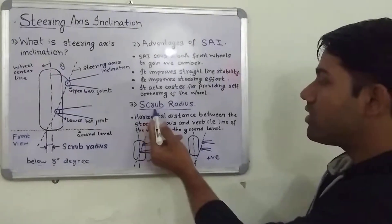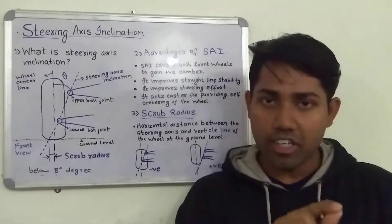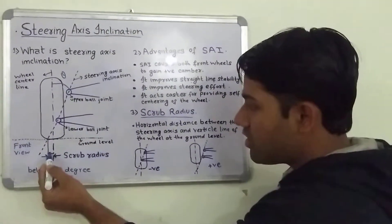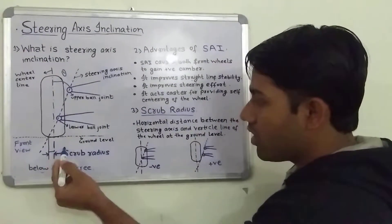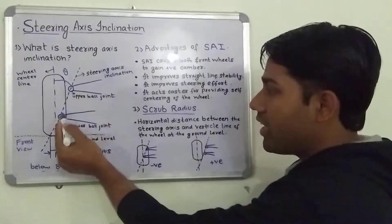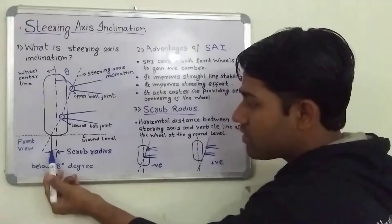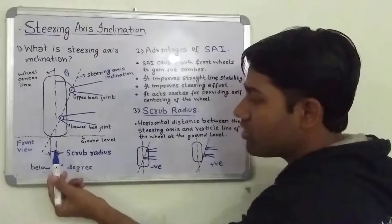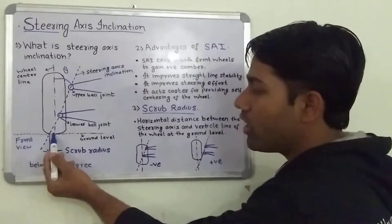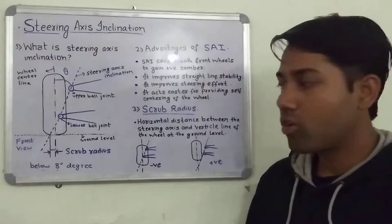Now, coming to the scrub radius. Scrub radius is the horizontal distance — as shown in this figure, the scrub radius is the horizontal distance between the steering axis and the wheel center line. This line shows the scrub radius at the ground level, not at the top level or below the ground level.